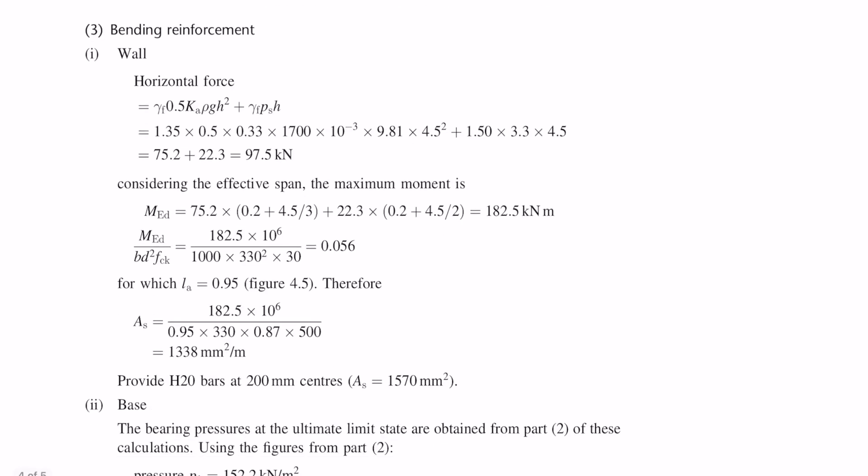Now we can move on to calculating the bending reinforcement in the wall and the base. The biggest bending moment in the wall is going to be at the base of the wall, so we're going to take moments about the base of the wall. Once you've worked out your bending moment we also need to work out the effective depth before we can calculate the area of steel required. The wall thickness at the base of the stem is 400mm. In this example they're assuming that the effective depth is 330, so therefore the cover is going to be around 60mm and the bars we're using is 20.